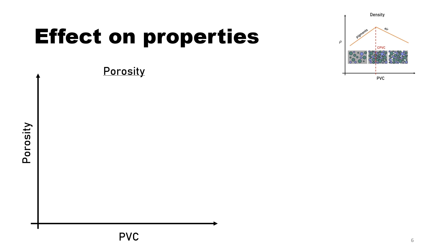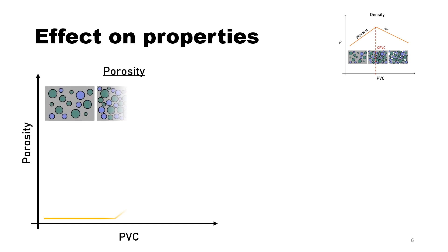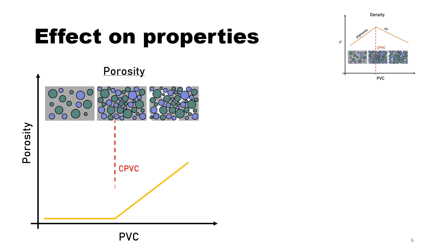Porosity is another property affected by the pigment volume concentration. Below the CPVC, there is enough binder available to wet all the pigments, creating a continuous non-porous film. However, above the CPVC, voids and spaces between the pigment particles form, creating a porous structure.